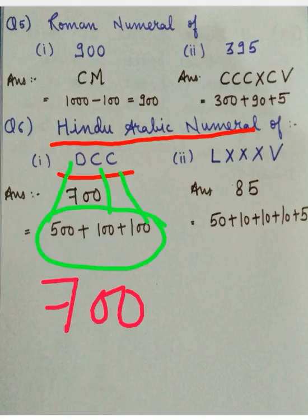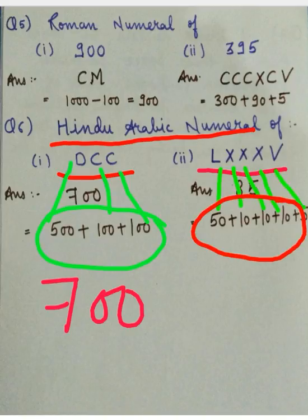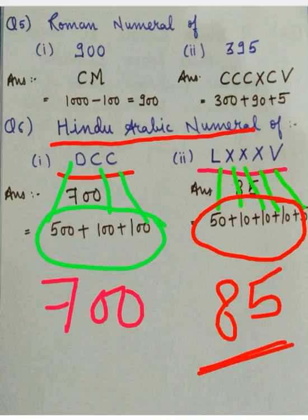Next is LXXXV. The symbol L represents 50, X represents 10 — appearing three times, giving 30 — and V represents 5. On adding all of them: 50 plus 30 plus 5, we get 85. This is the answer.